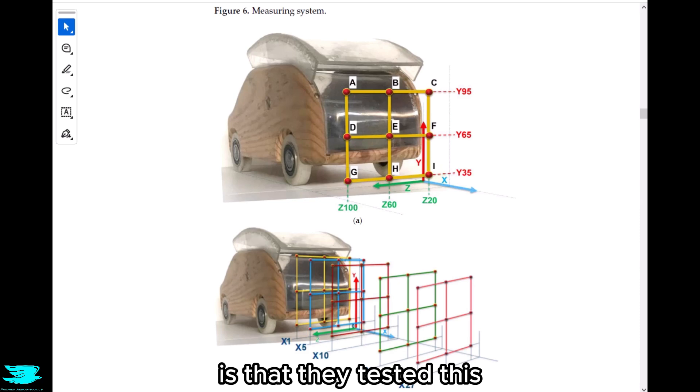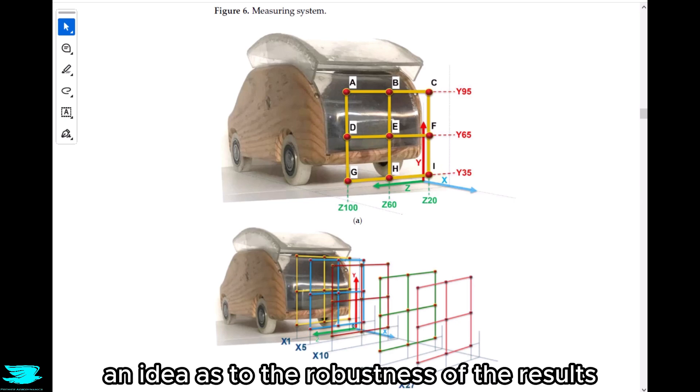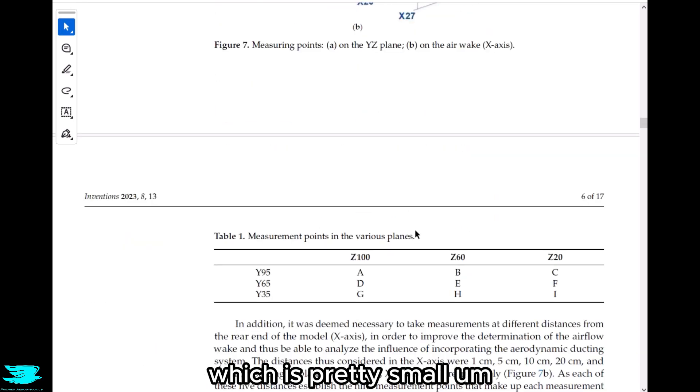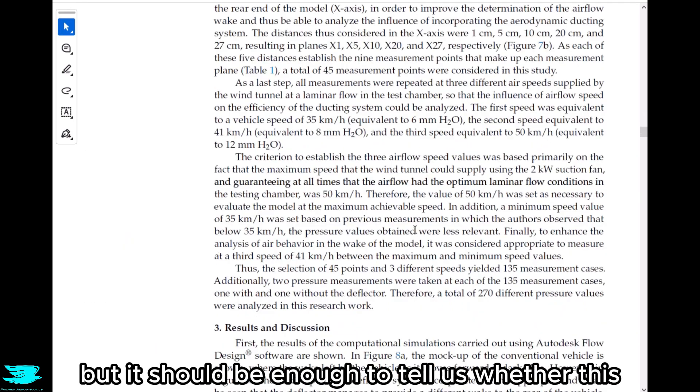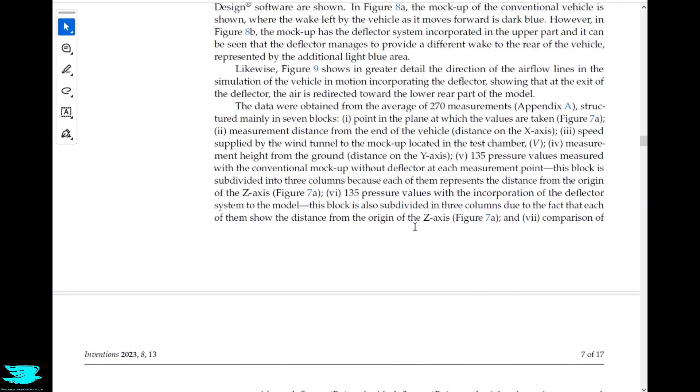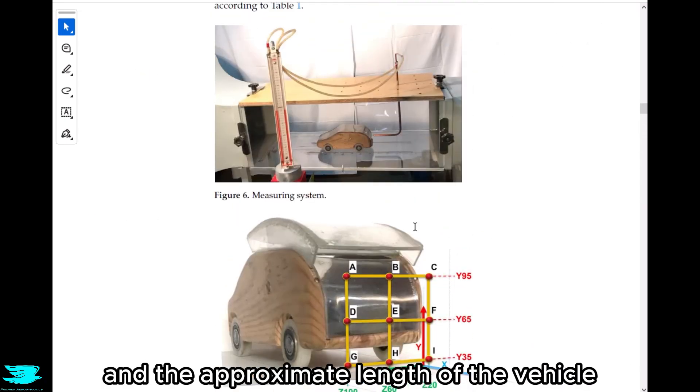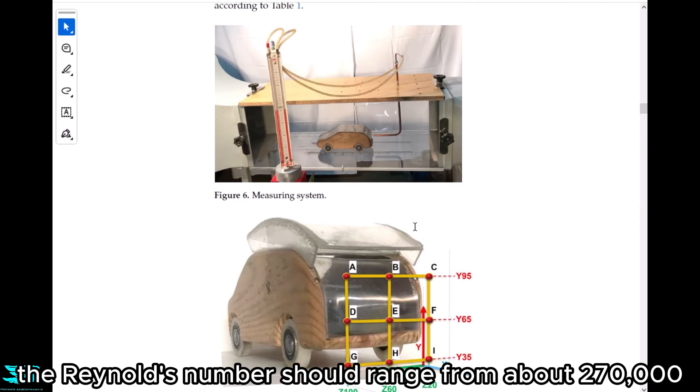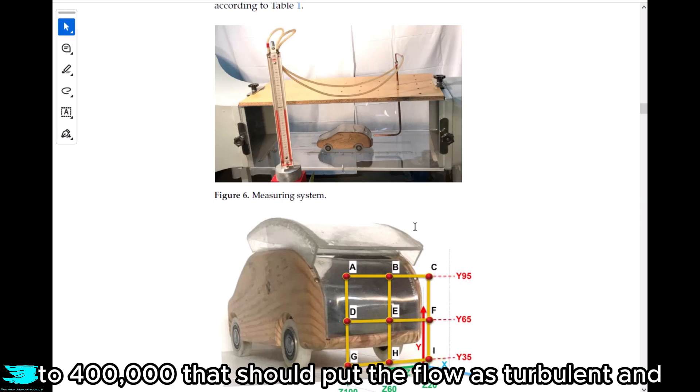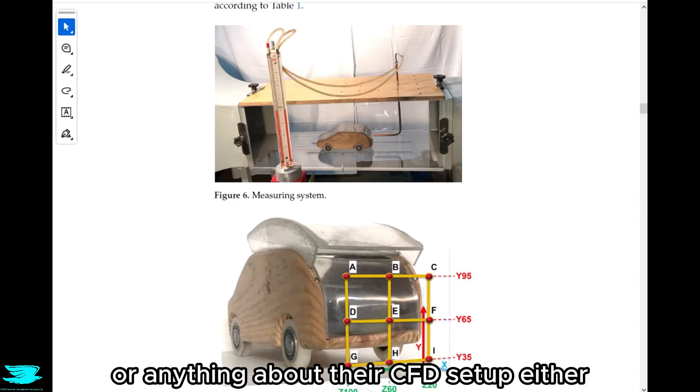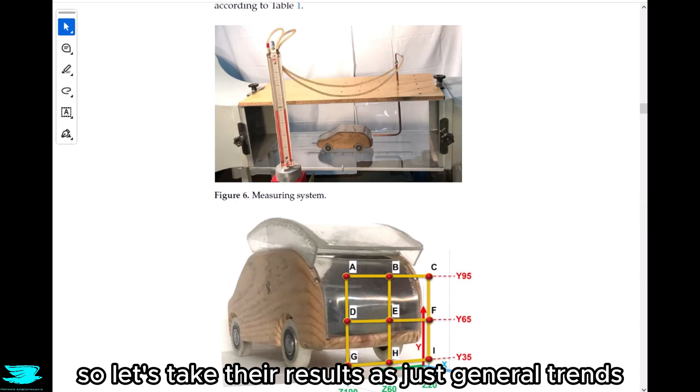One really good thing about this research is they tested this idea at three different speeds: 35, 41 and 50 kilometers per hour. This will give us an idea as to the robustness of the results and whether it performs better at certain velocities. The car was a 1 to 12 scale model which is pretty small, but it should be enough to tell us whether this idea holds merit. Based on the flow speeds and approximate length of the vehicle, the Reynolds number should range from about 270,000 to 400,000. That should put the flow as turbulent or at least pretty close to it. There's no information about the uncertainty in their results or their CFD setup, so let's take the results as just general trends.